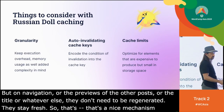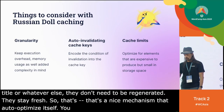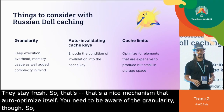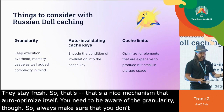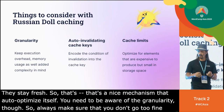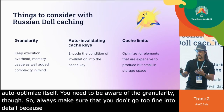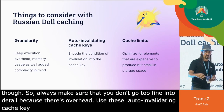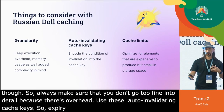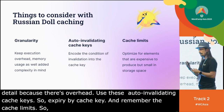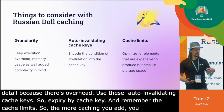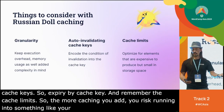You need to be aware of granularity though — always make sure you don't go too fine into detail because there's overhead. Use these auto-invalidating cache keys, and remember the cache limit. The more caching you add, you risk running into something like your Memcache running out of memory, which actually disables the cache and doesn't make things faster.